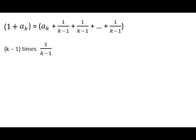We will write this expression as the sum of a_k and exactly k minus 1 copies of 1 over k minus 1. It's weird but correct — this will become more clear in the next step.